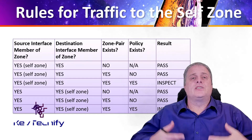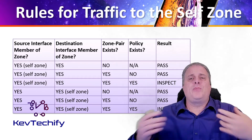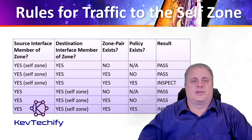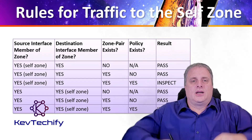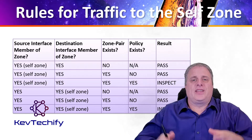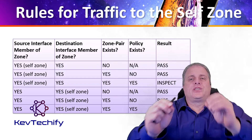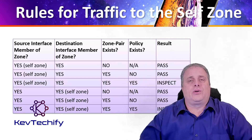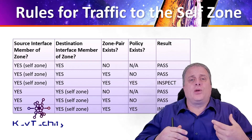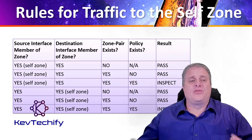The self-zone is the router itself, and this includes all the IP addresses assigned to the router interfaces. Self-zone traffic is traffic that originates at the router or is addressed to a router interface. The rules depend on whether the router is the source or the destination of the traffic.